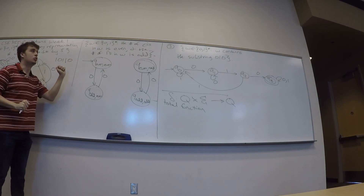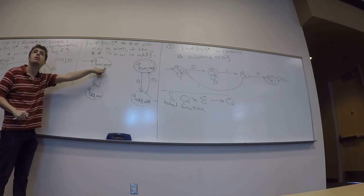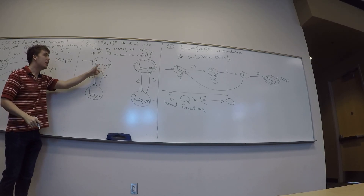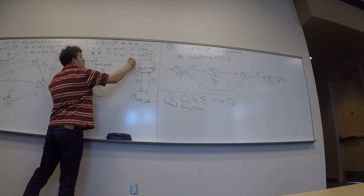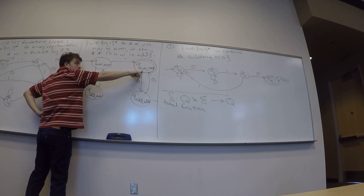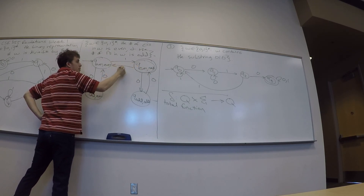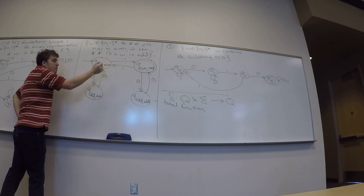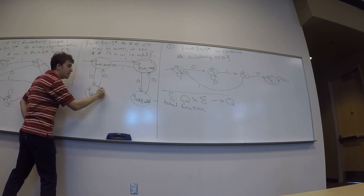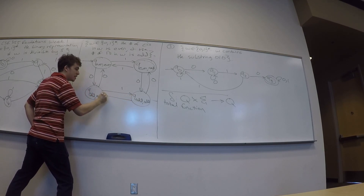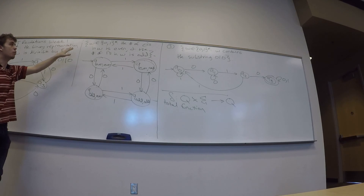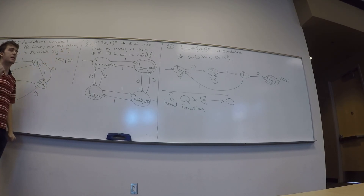For the 1-transitions, it's the ones count that changes — the second coordinate flips, the first stays the same. So (even, even) on 1 goes to (even, odd). (odd, even) on 1 goes to (even, even) — wait, that's (odd, odd). And (odd, odd) on 1 goes to (odd, even). The parity of the number of zeros and ones gives us interesting DFA behavior — we're tracking them separately.